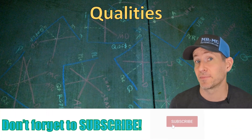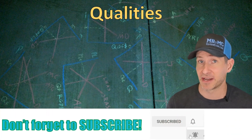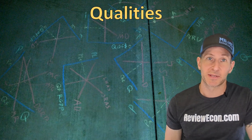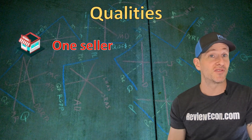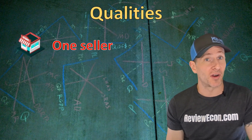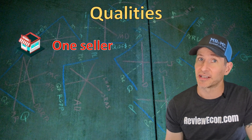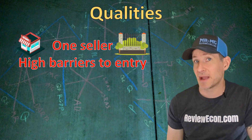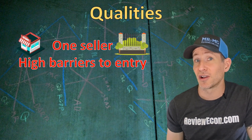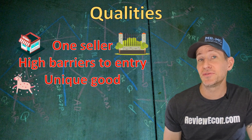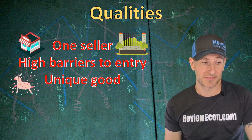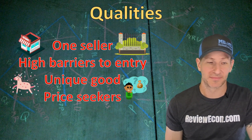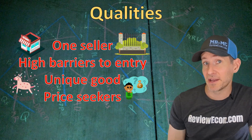In the last unit we learned about perfectly competitive firms. Here we're going to learn about imperfectly competitive firms, and the first of those is the least competitive: monopolies. Monopolies have some specific qualities. First, monopolies have just one seller within the market — the market is the firm and the firm is the market. We also have high barriers to entry so high they prevent new businesses from entering, because if new firms enter to compete we no longer have a monopoly. The product that monopolies sell is unique — there are no close substitutes. As a result, monopolies have a lot of influence on the price they can charge. They are what's called price seekers and don't have to just take the price from the market like a perfectly competitive firm does.